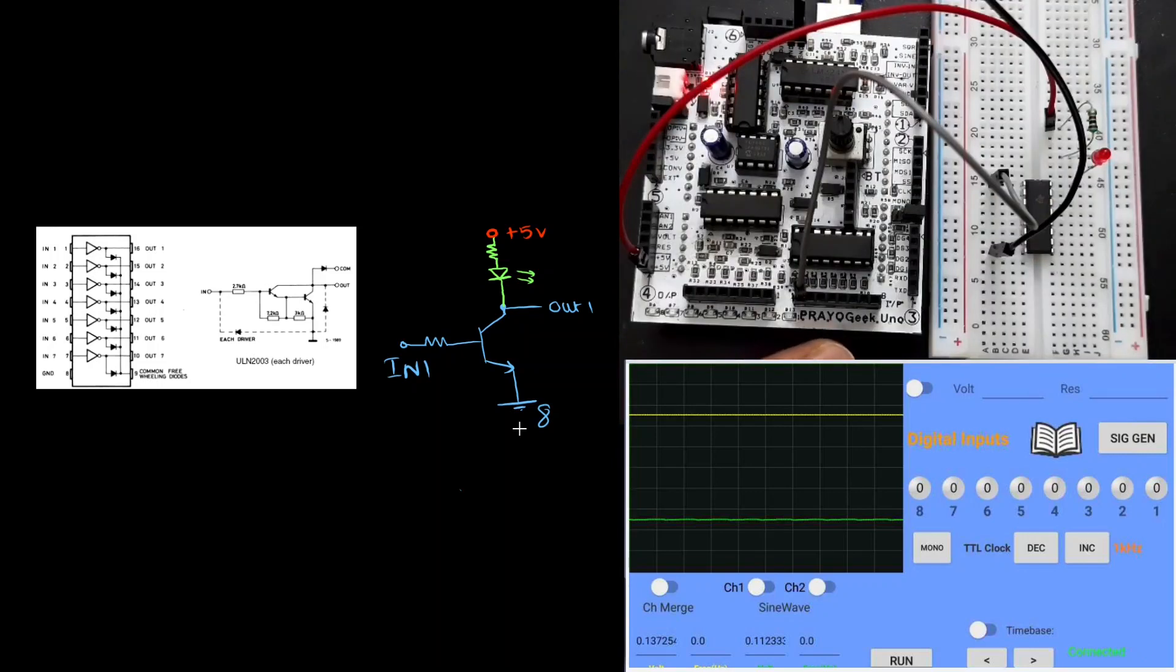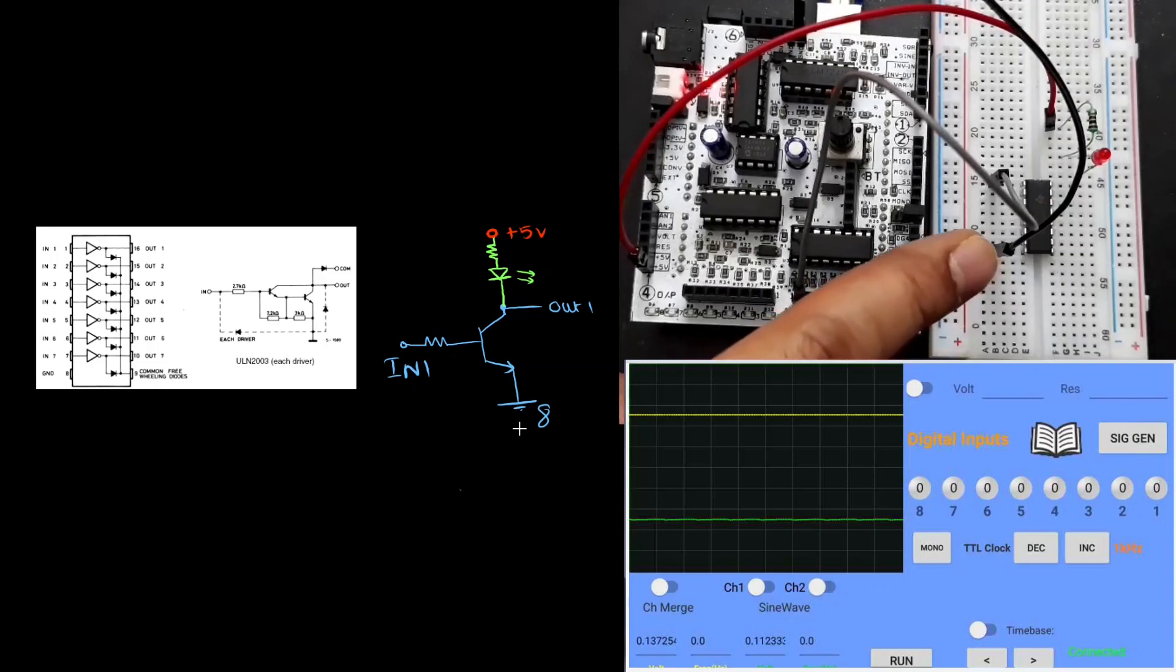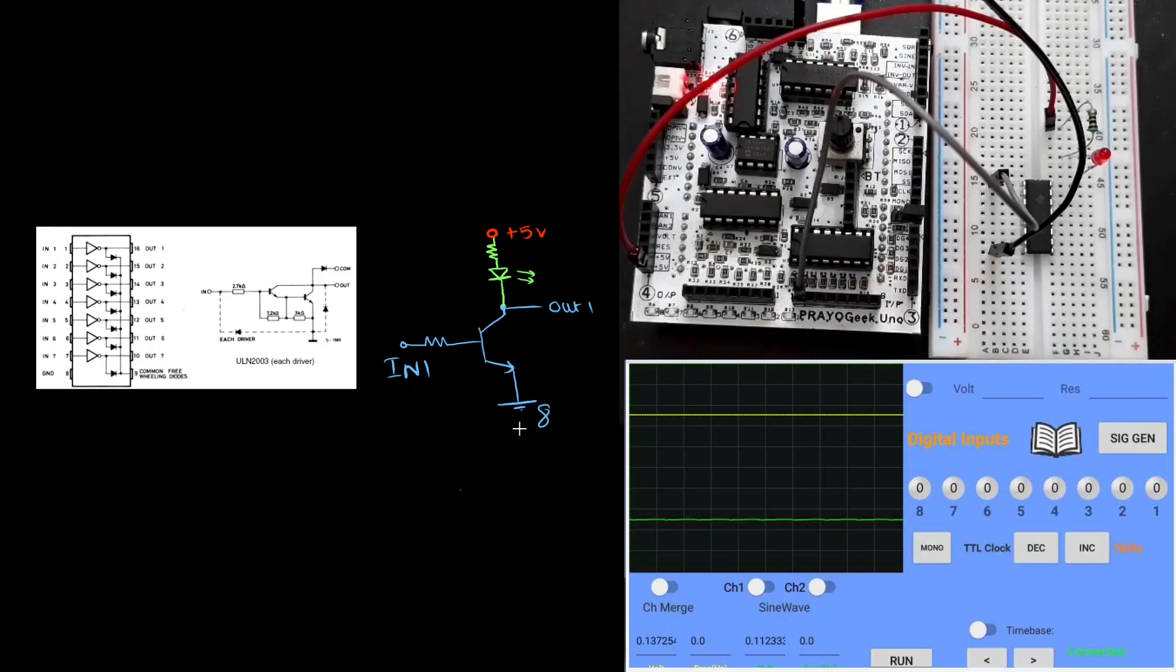By controlling switch number 1 from the Android app, I should be able to turn on and off the LED. Let's look at the circuit once before we go ahead. I have connected switch 1 to input 1 and the output is connected to LED.